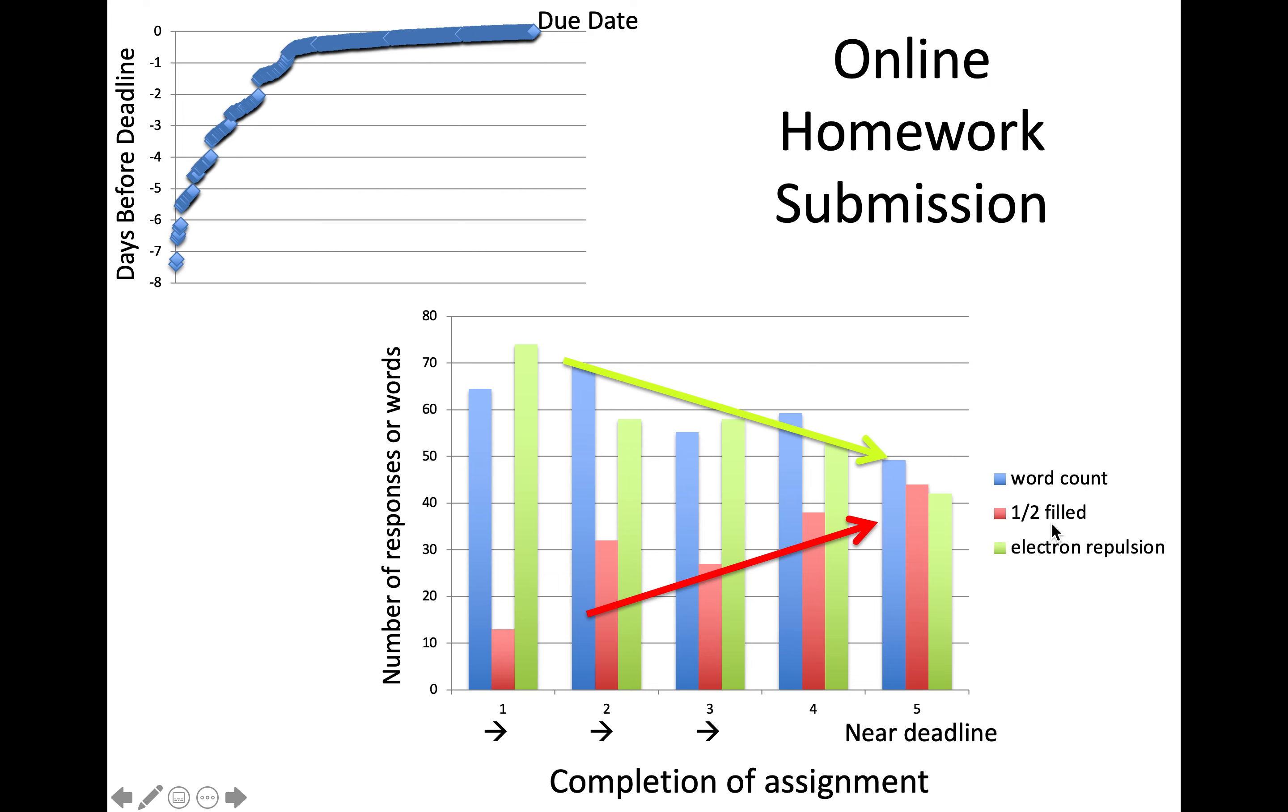Word count was relatively the same. But what about the nature of the explanation? Students explaining things in terms of being half-filled became more common as we approached the deadline. The more complete explanation of electron repulsion became less common. This has been found in other aspects of science education. It's not that weaker students submit closer to the deadline. It's just how our brains work—when we're pressed for time near the deadline, the more naive explanation is what pops into our head and that's what we provide.